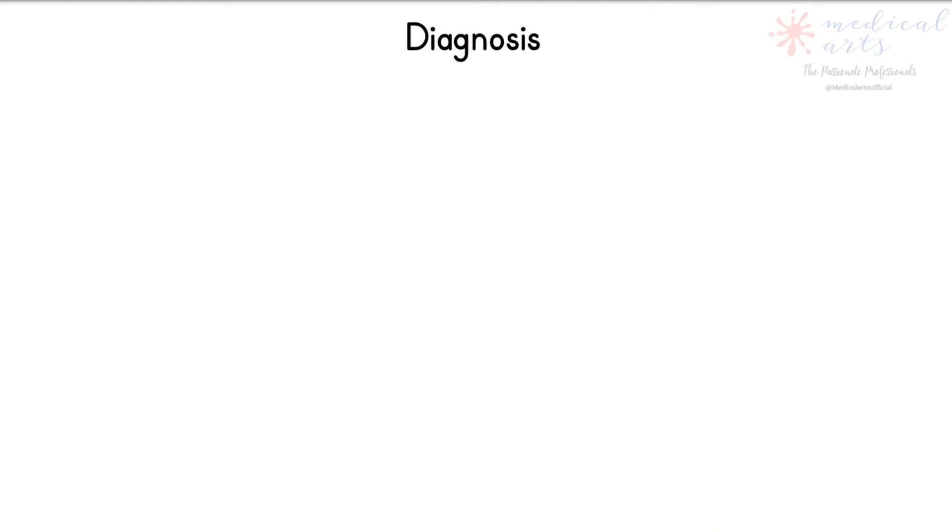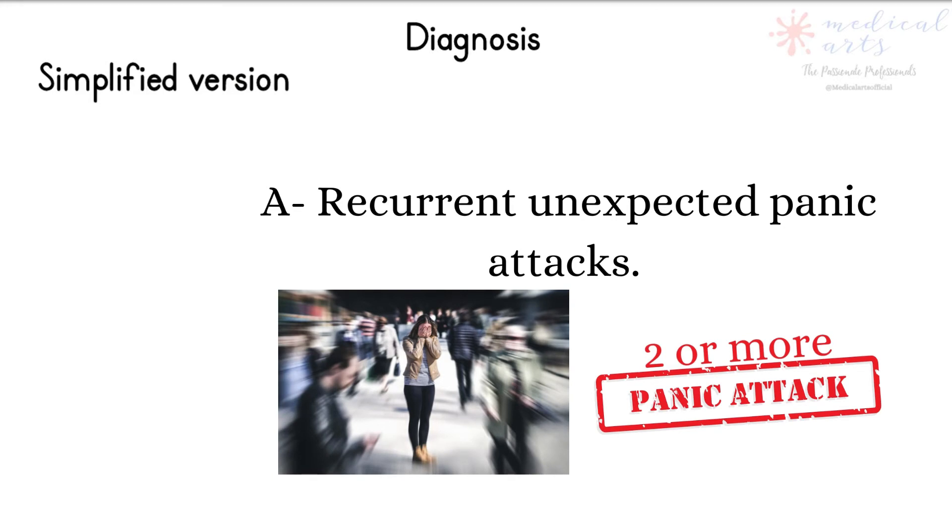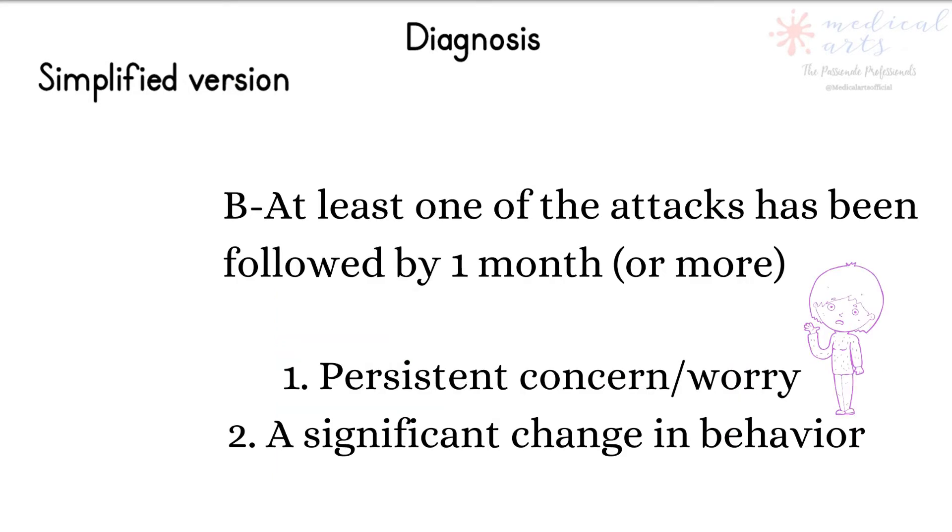To consider a diagnosis of panic disorder, the following four criteria are required as per DSM-5. A: Recurrent unexpected panic attacks. B: At least one of the attacks has been followed by one month or more of persistent concern or worry about additional panic attacks or a significant maladaptive change in behavior related to the attacks.